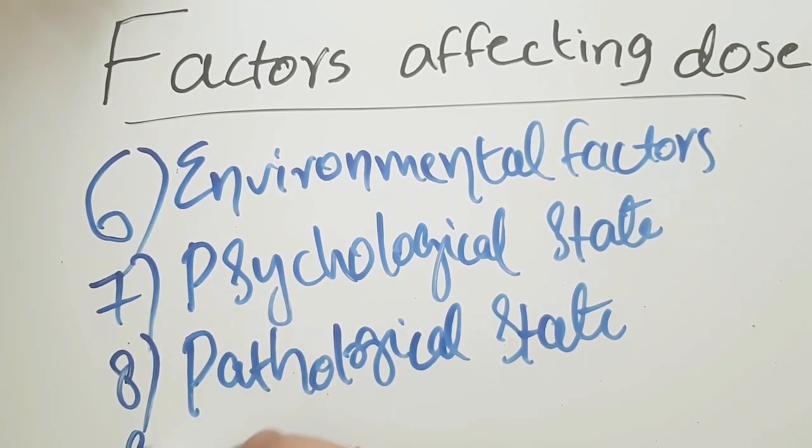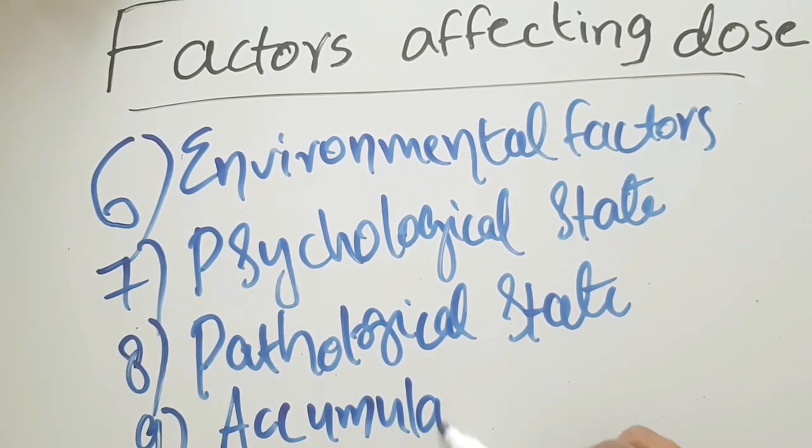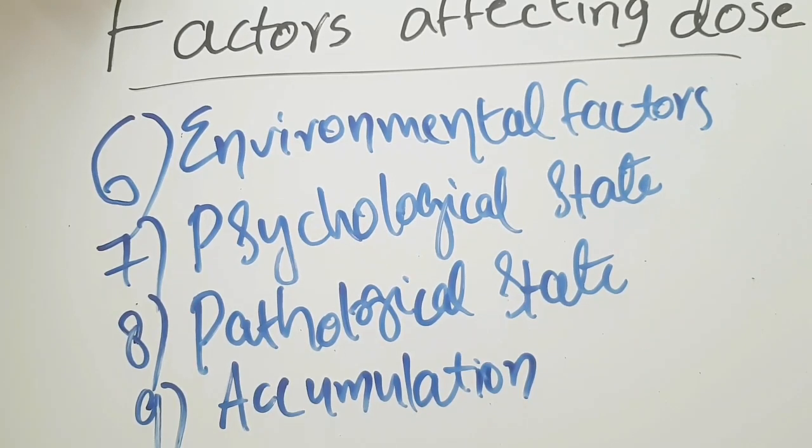The ninth one: accumulation. Accumulation is another factor which affects the dose of a drug. Any drug will accumulate in the body if the rate of absorption is more than rate of elimination. Slowly eliminated drugs are most often accumulated in the body and often cause toxicity. Example: prolonged use of chloroquine can cause damage to the retina. Drug accumulation is another factor which affects the dose of a drug.